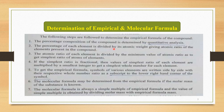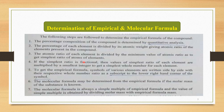Step 3: the atomic ratio of each element is divided by the minimum value of atomic ratio to get the simplest ratio of atoms. Step 4: if the simplest ratio is fractional, the values are multiplied by the smallest integer to get a simplest whole number for each element.